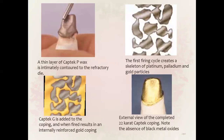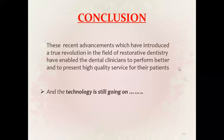Captive P is waxed intimately contoured to the refractory die; the first firing cycle creates a skeleton of platinum, palladium, and gold particles. Captive G is then added to the coping, and when fired results in an internally reinforced gold coping. The external view of the completed 22-carat plastic coping shows the absence of black metal oxides. This completes the discussion on ceramics — covering amalgam, GIC, composite, and ceramic.